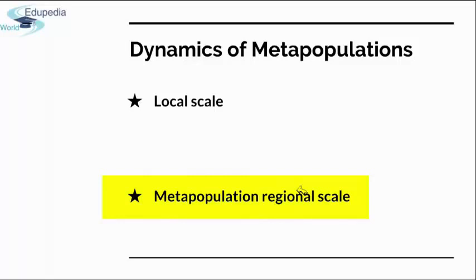At the regional level, you can think of a state with many different cities, each having their daily routines, but with some interactions between cities — people traveling from one city to another and back. This can be considered the metapopulation regional scale.